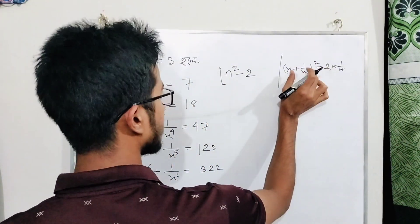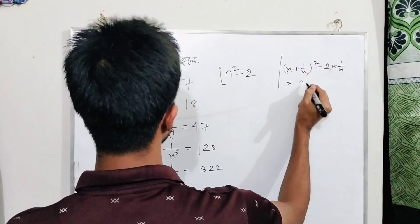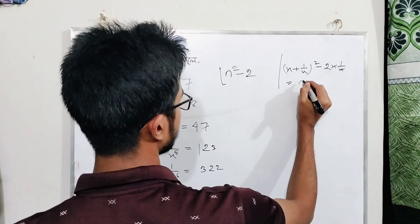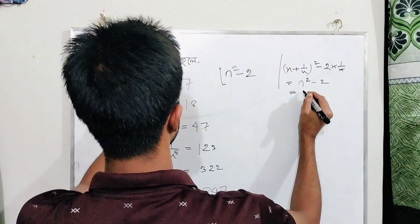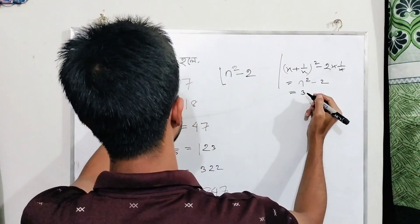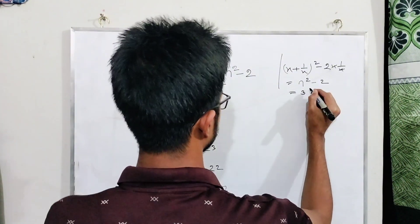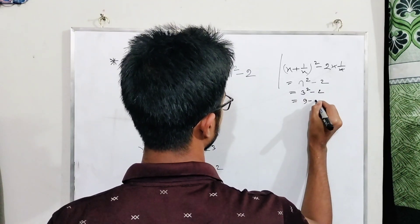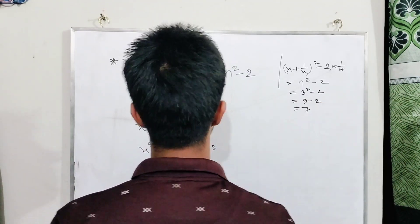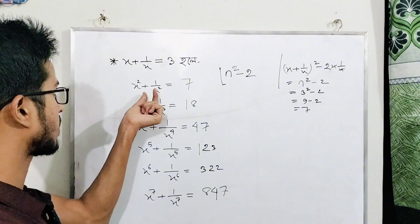Since x plus one by x equals three, we have three squared minus two, which equals nine minus two, equals seven. So x square plus one by x square equals seven.